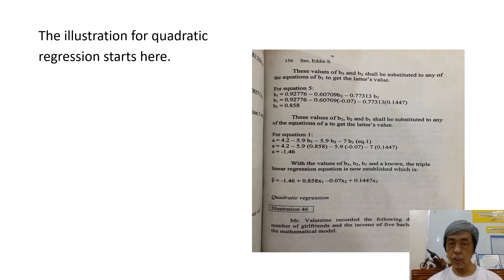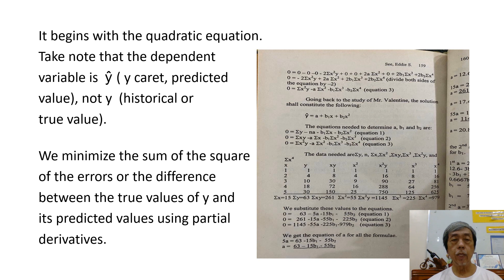The illustration for quadratic regression starts here. It begins with a quadratic equation. Take note that the dependent variable is y-carat, a predicted value.